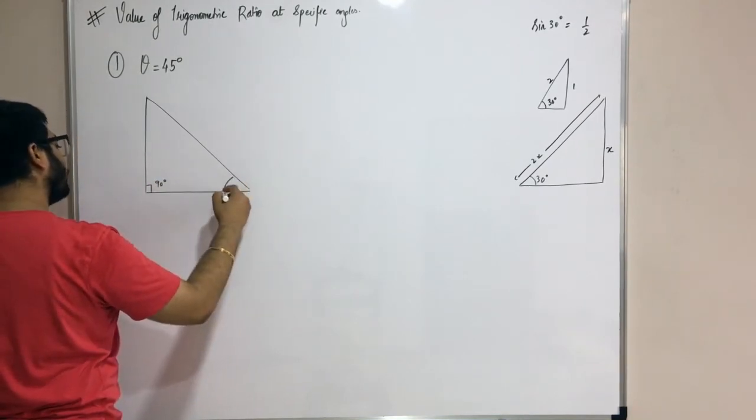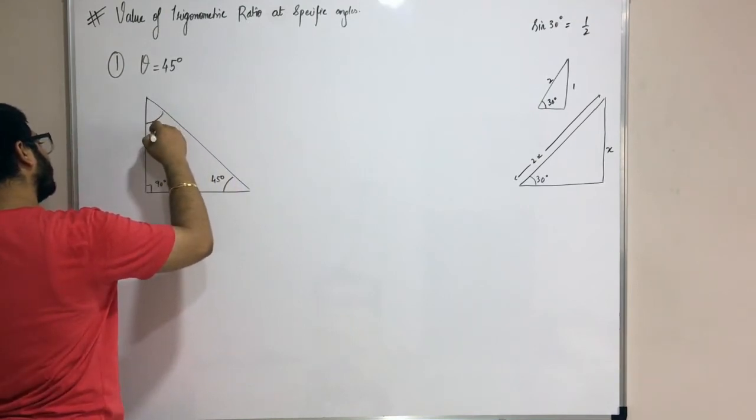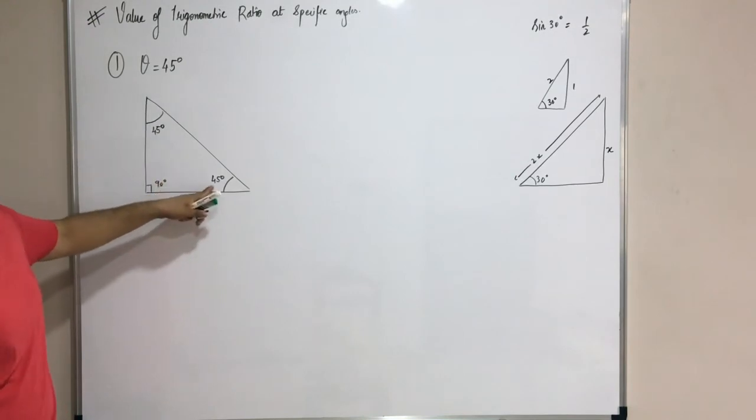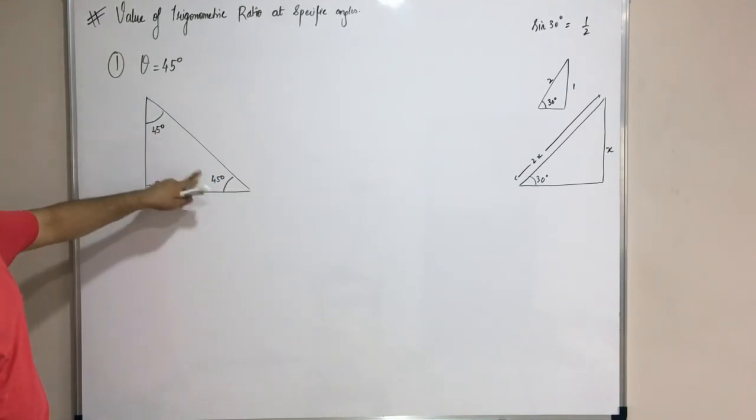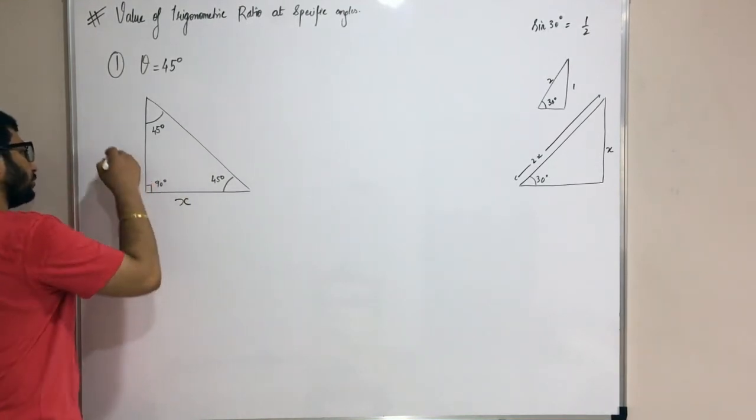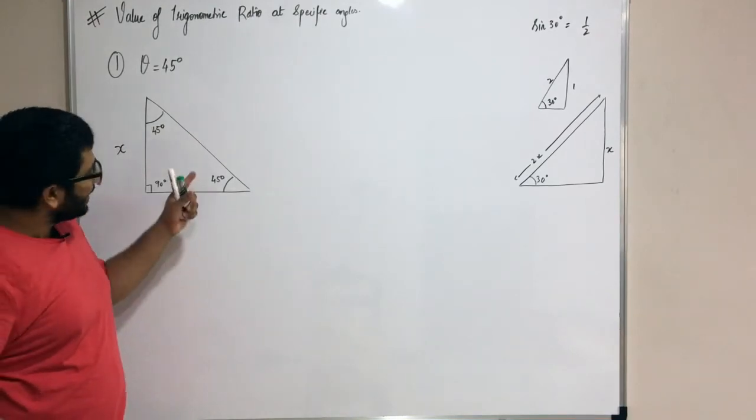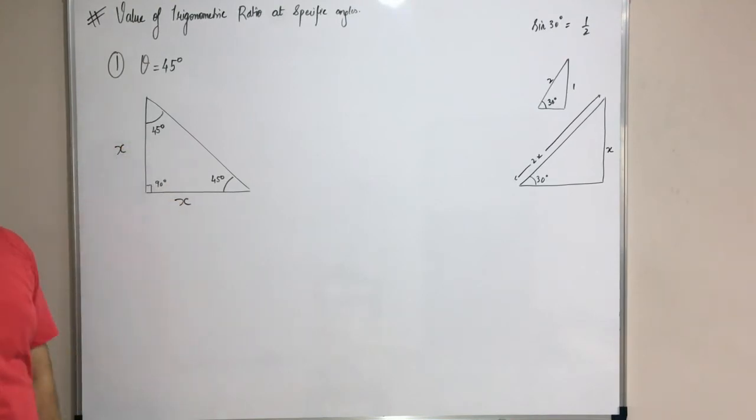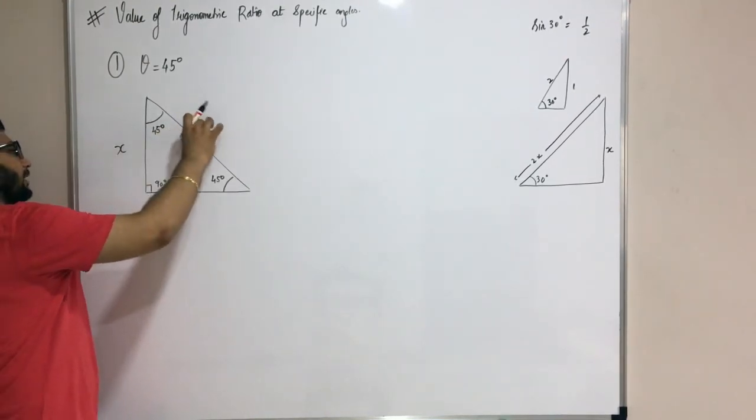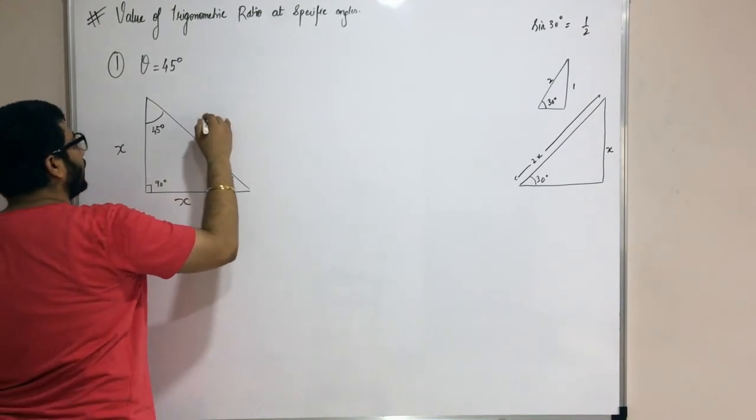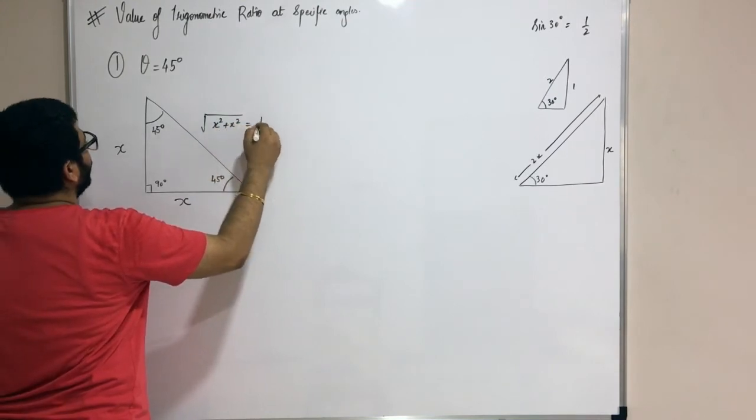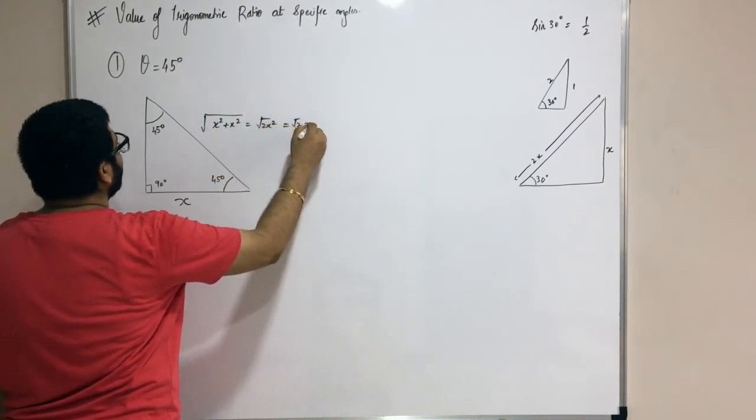If I make this 45 degrees, will this also be 45 degrees? Yes. So it is a right-angle triangle with 90 and 45, so the other will also be 45. This is an isosceles right-angle triangle. If you call this x, then this will also be x. We studied in 9th grade: equal angles opposite to equal sides. By Pythagoras, the hypotenuse will be root of x² plus x², which is root of 2x² equals root 2x.